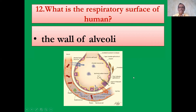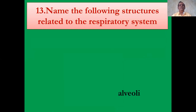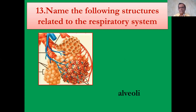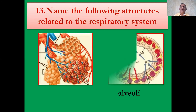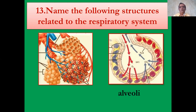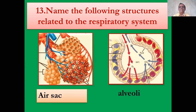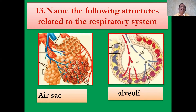The 12th question: what is the respiratory surface of humans? Simple — the wall of the alveoli. Now name the following structures related to the respiratory system. We studied the respiratory system — we have to clearly identify these parts. The first diagram is the air sac. The second diagram is the alveoli — that is the basic part for the gas exchange.